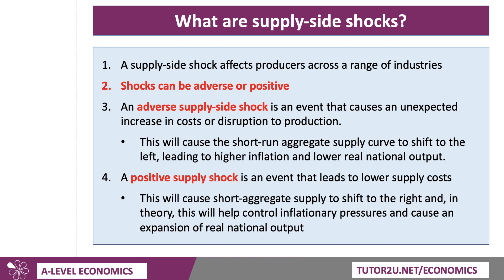Broadly speaking, shocks can be both adverse or positive. An adverse supply-side shock causes an unexpected increase in costs or causes a negative effect on production, leading the short-run aggregate supply curve to shift to the left, leading to higher inflation and, other things being the same, a fall in real output.